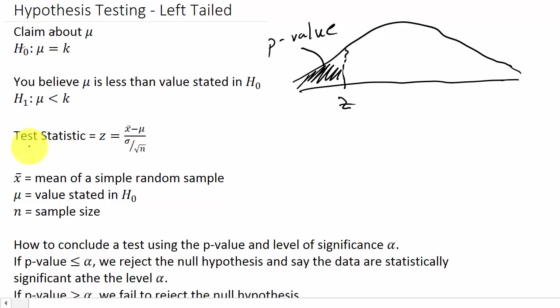What we need to do is find our test statistic z, which is equal to x bar minus mu over sigma divided by the square root of n. x bar is the mean of a simple random sample, mu is the value that's stated in H naught or null hypothesis, and n is the sample size.